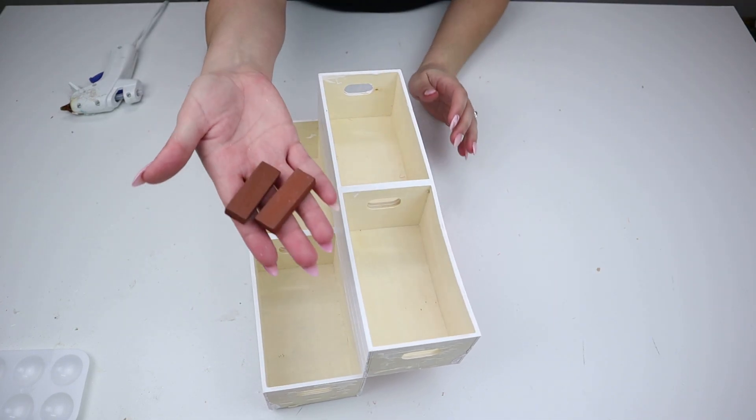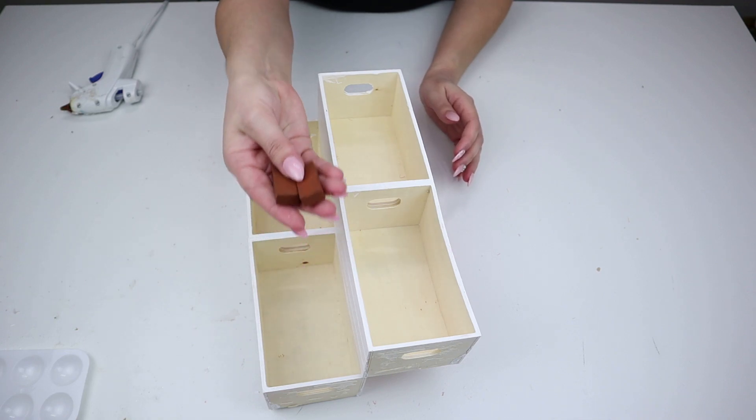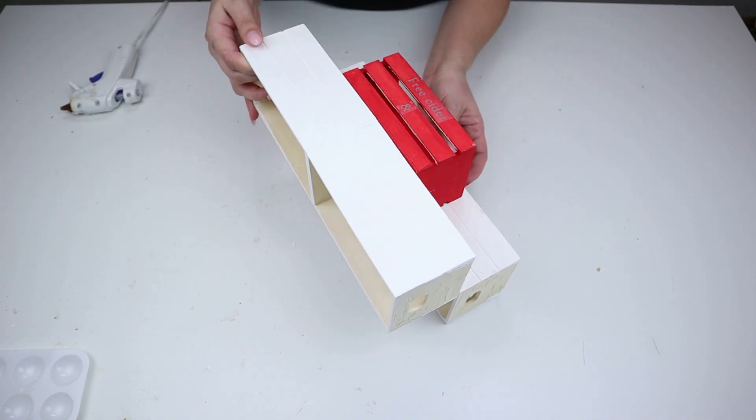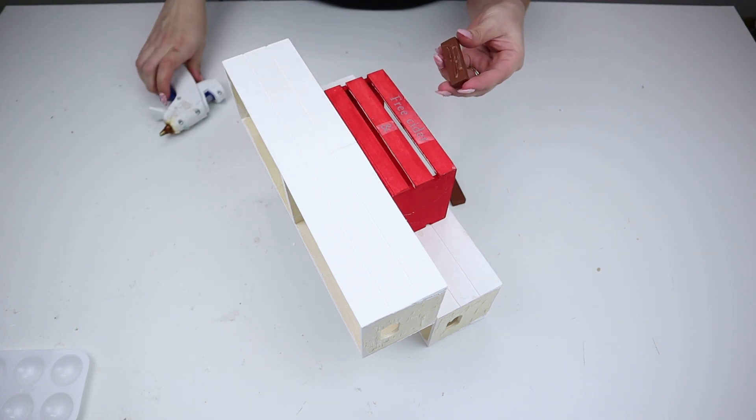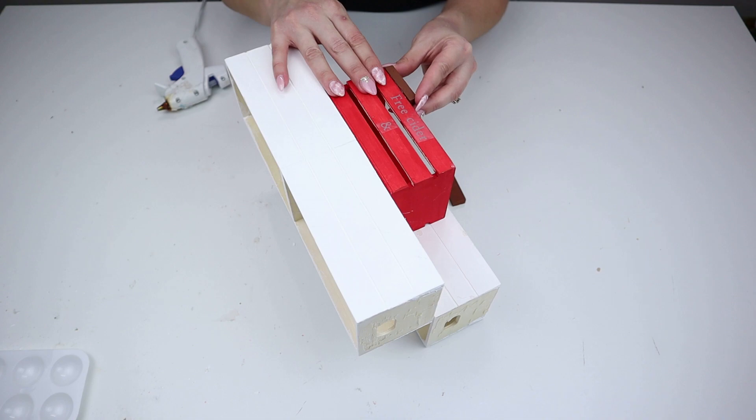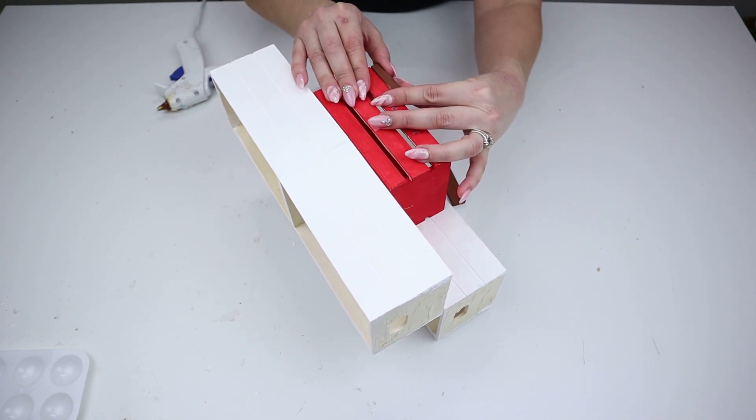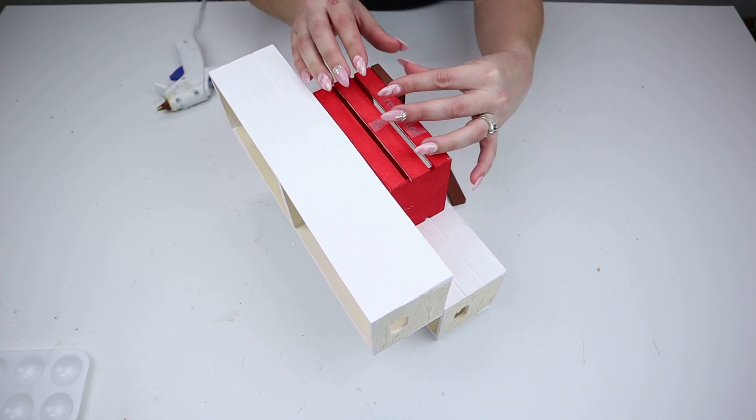Once I glued this all together, I thought it would stand up by itself, but it was still kind of wobbly. So what I did was I had some jingle block pieces, which I always have on hand, and I decided to add them to the bottom of the mini crate and it worked perfectly and it leveled everything out. So I was able to create this with the things I had on hand.